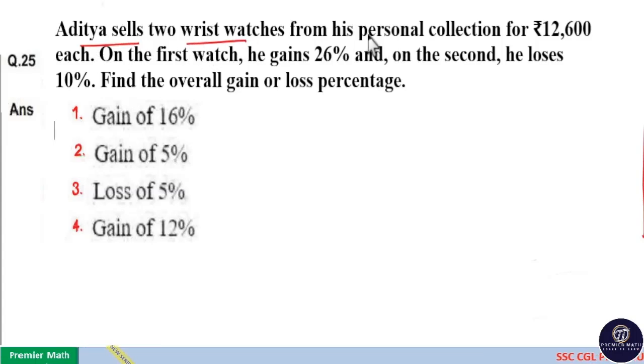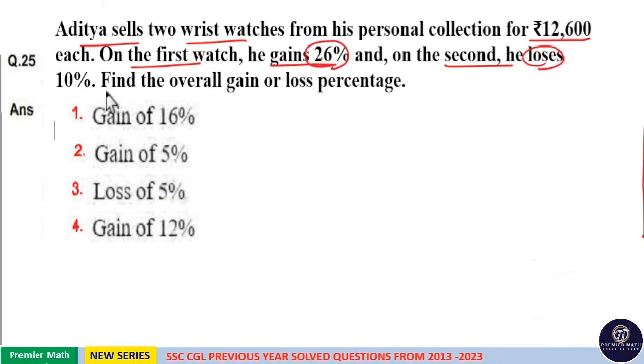Aditya sells two wrist watches from his personal collection for Rs 12,600 each. On the first watch, he gains 26% and on the second, he loses 10%. Find the overall gain or loss percentage.